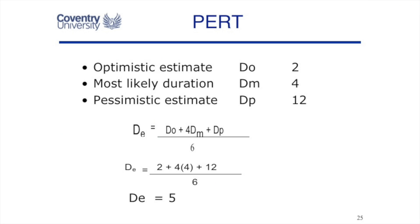So for instance, in this example, the optimistic duration might be two days, the most likely duration, four days, and the pessimistic duration, 12 days.